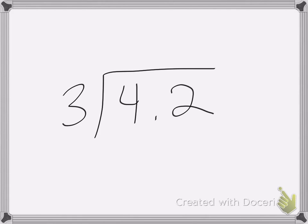So here we have the problem: 4.2 divided by 3. When we're dividing by a whole number, we don't need to change anything. With the division problem, the decimal point comes straight up when we're dividing by a whole number.